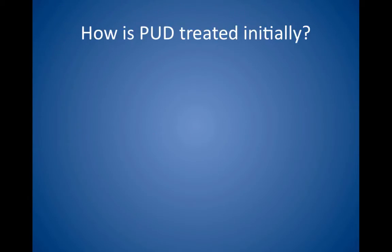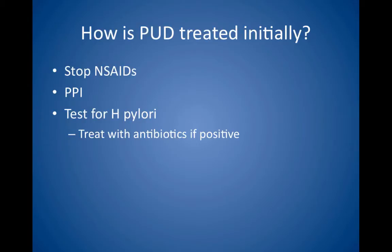How is peptic ulcer disease treated initially? First, remember that diet changes are not thought to help heal ulcers, although reduced alcohol and tobacco use may speed healing. Stop all NSAID use. Start treatment with proton pump inhibitors, test for Helicobacter pylori infection, and treat with antibiotics if positive. Many regimens exist, but the most commonly used is triple therapy with a proton pump inhibitor, clarithromycin, and amoxicillin.